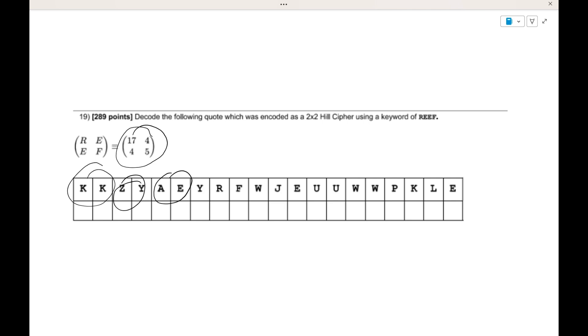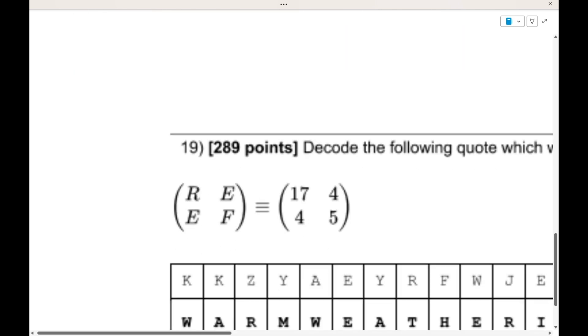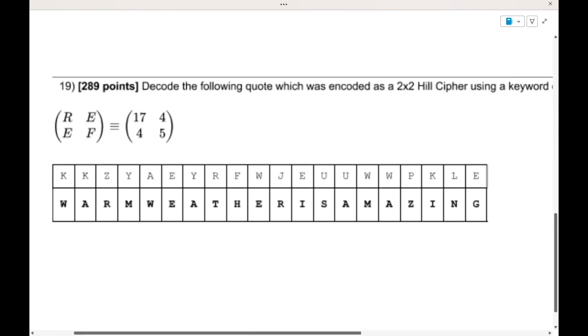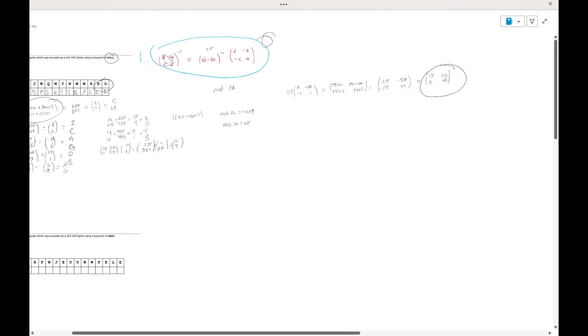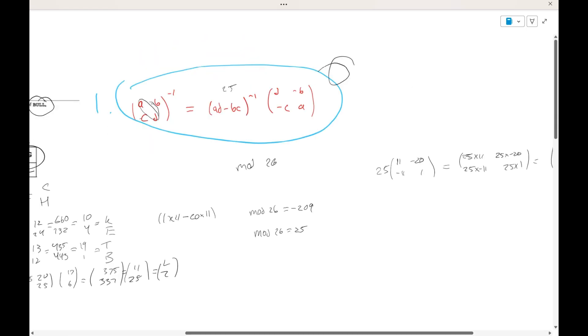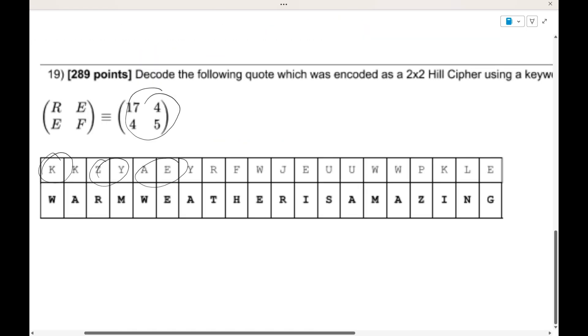Alright, so hopefully you guys paused the video, and the answer you should have gotten is warm weather is amazing. So it was pretty simple. You find the inverse of this using the formula given up here. And then you're just going to multiply it by each pair of two.